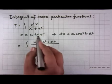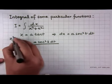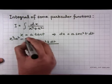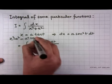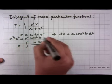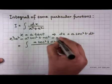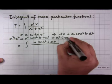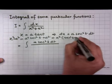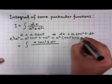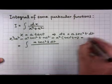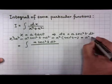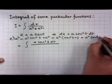Since x = a·tan(t), therefore x²+a² equals a²·tan²(t) + a². Taking a² as common gives a²(tan²(t)+1). Using the trigonometric identity 1+tan²θ = sec²θ, this gives a²·sec²(t).